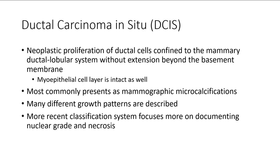Ductal carcinoma in situ is a neoplastic proliferation of ductal epithelial cells confined to the ductal or lobular system — meaning it does not extend beyond the basement membrane and retains an intact myoepithelial cell layer. If you use myoepithelial stains such as smooth muscle myosin, calponin, and P63, these lesions will show an intact myoepithelial cell layer.